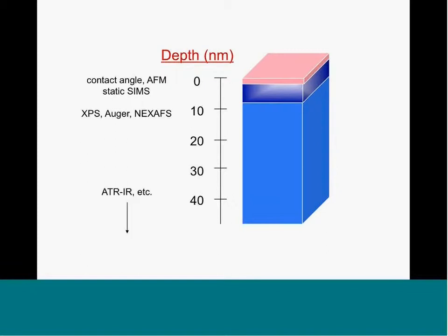These techniques also look at different sampling depths. You may have different techniques that give quantitative information about elemental composition, but if you're looking by EDS—some technique that probes microns into the sample—versus XPS that probes a few nanometers, the surface composition is different from the bulk, so you'll necessarily get different answers. That doesn't mean one or the other is wrong; they're just sampling different parts of the sample. These differences all need to be considered when laying out an experimental plan.